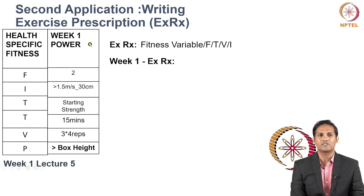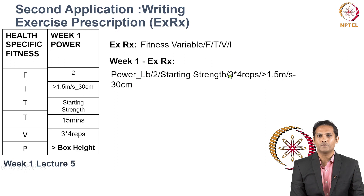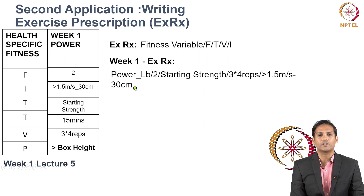Using week one power drills as an example, here is how you write a weekly exercise prescription. The fitness variable is power — lower body. Frequency: two times per week. Type of stimulation: starting strength. Volume: three sets of four repetitions. Intensity: greater than 1.5 meters per second, or a box height of 30 centimeters. This is how you write an exercise prescription on a weekly basis using FITTVP.